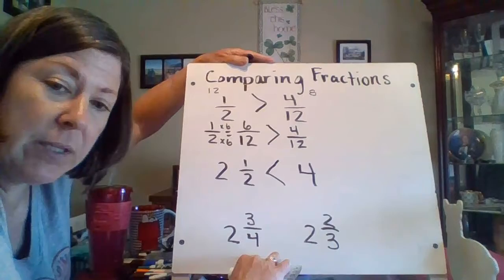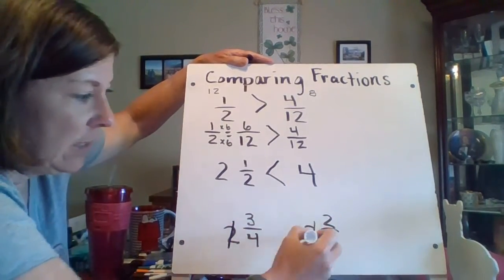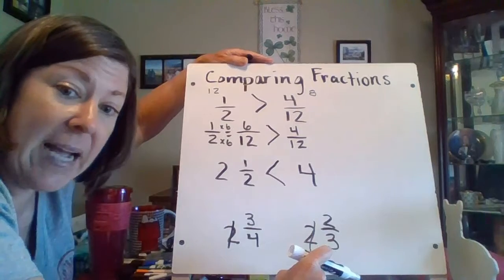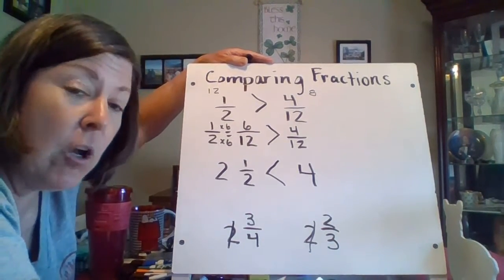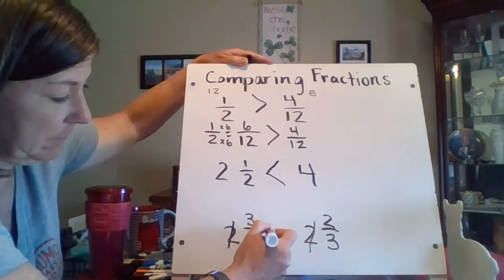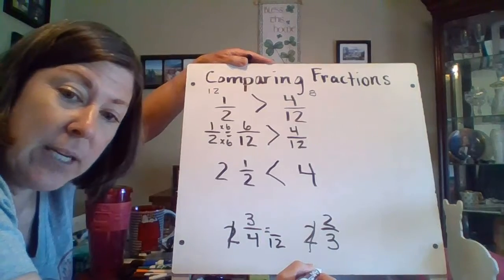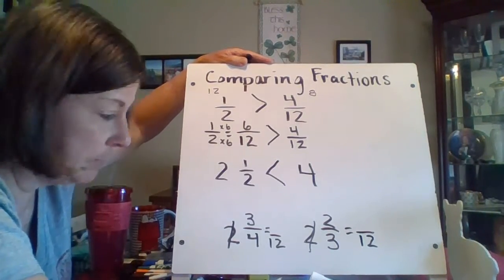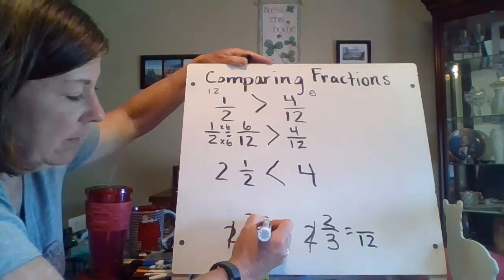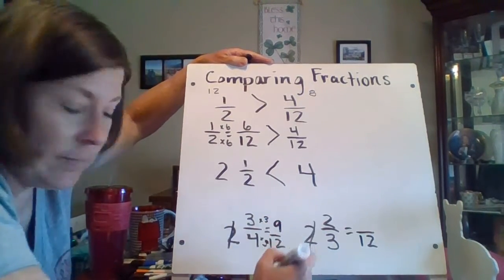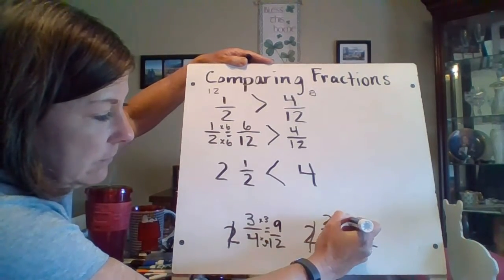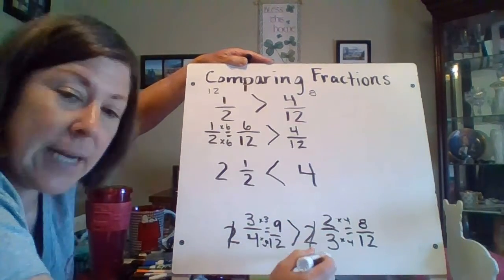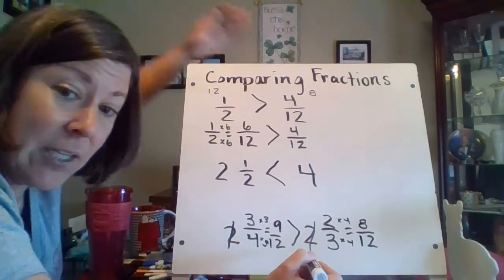But then I have 2 and 3 fourths versus 2 and 2 thirds. The whole numbers are the same, so I have to compare the 3 fourths and the 2 thirds. I know that 12 is a common denominator for 4 and 3 — 4, 8, 12; 3, 6, 9, 12. I'm going to rewrite 3 fourths with a denominator of 12, multiplying by 3 thirds, getting 9 twelfths. And 2 thirds multiplied by 4 fourths gives me 8 twelfths. 9 twelfths is greater than 8 twelfths, which means 2 and 3 fourths is greater than 2 and 2 thirds.